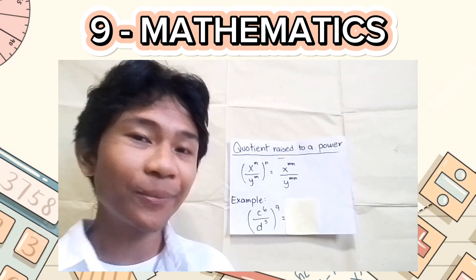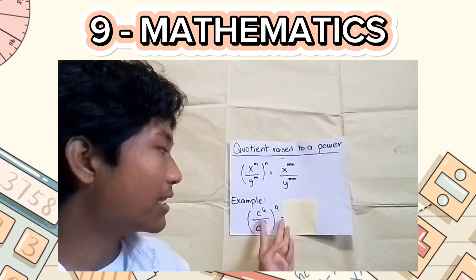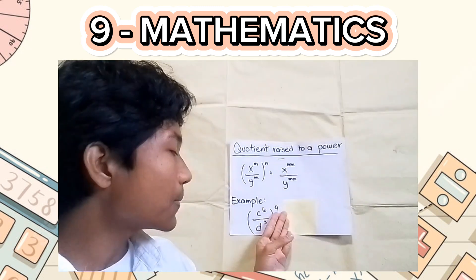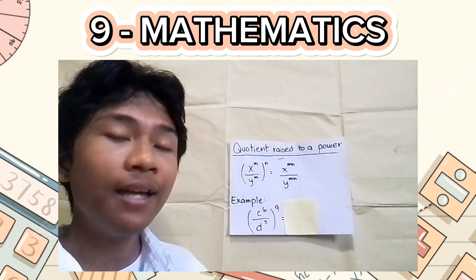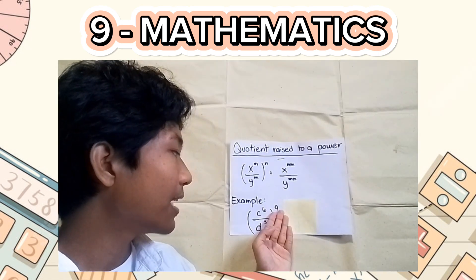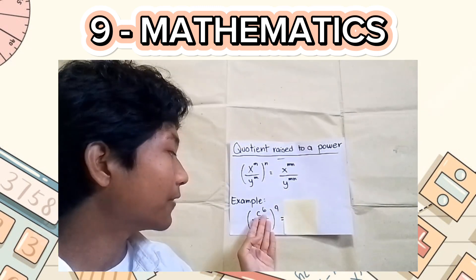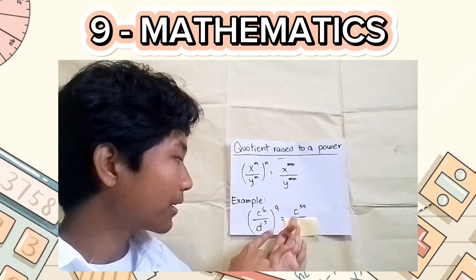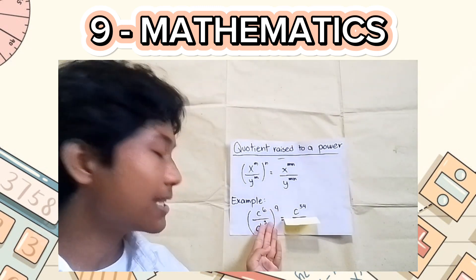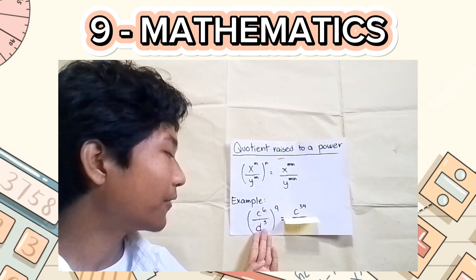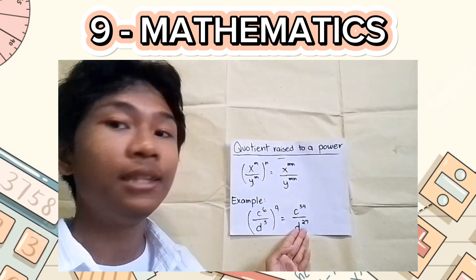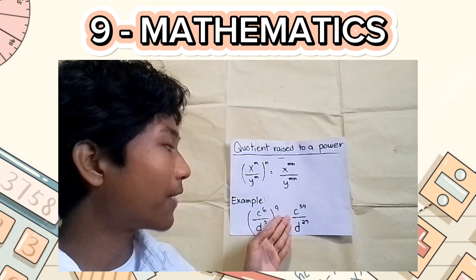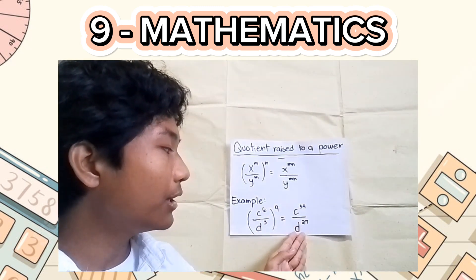With all that settled, let's try to solve an example. Here we have c raised to 6 over d cubed, all raised to 9. Like what we did earlier, we can distribute the property of the number 9 to the exponents of the variables c and d, and then we will copy the variable. So 9 times 6 is equal to 54, giving us c raised to 54. And 9 times 3 is equal to 27, giving us d raised to 27. Since they don't have the same variable, the final answer is c raised to 54 over d raised to 27.